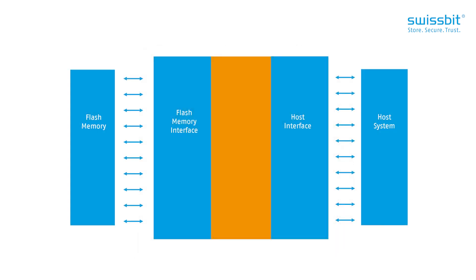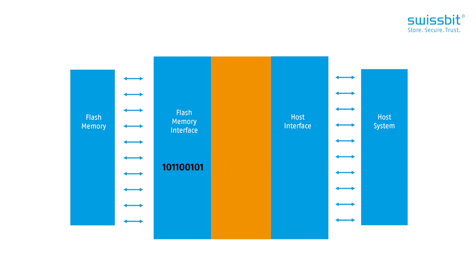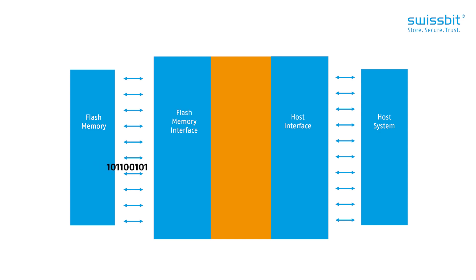First, the host interface of the controller must accept the user data sent by the host system and then passes it on to the flash interface within the controller. From here, data is transferred onto the flash memory. When data is later recalled by the host, the data similarly must pass through these interfaces within the controller before returning to the host.